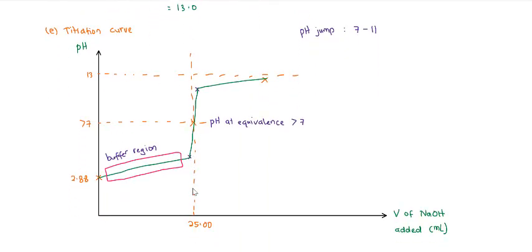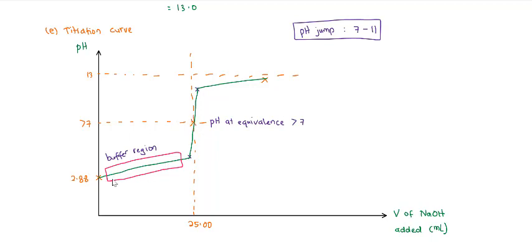To draw the titration curve — remember, pH here is in the conical flask and the volume refers to the volume in the burette. The pH jump for weak acid and strong base titration is around 7 to 11. Notice that we have a buffer region because we start with weak acid. As we add weak acid and strong base little by little, before it reaches the equivalence point, the base is the limiting reactant, so the solution contains weak acid and salt — that is the buffer region. Weak acid and salt producing the same conjugate base forms a buffer solution.